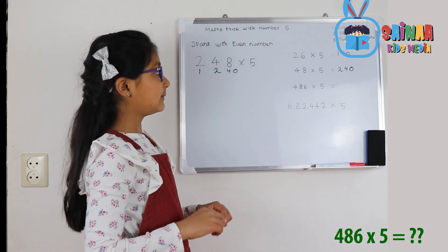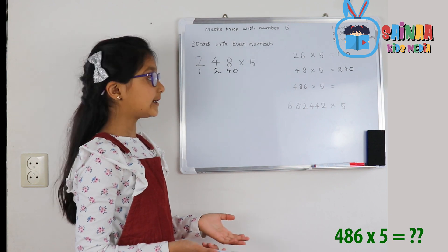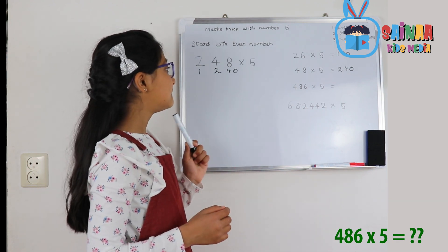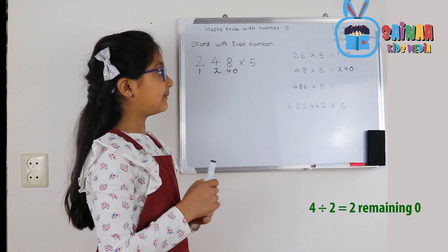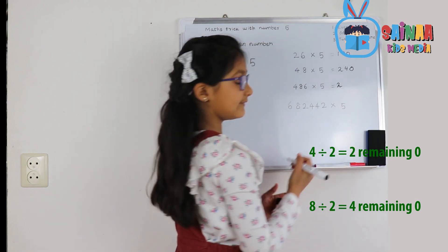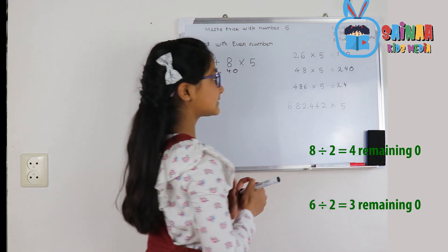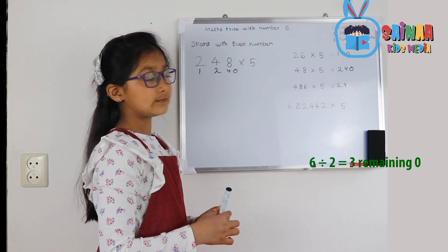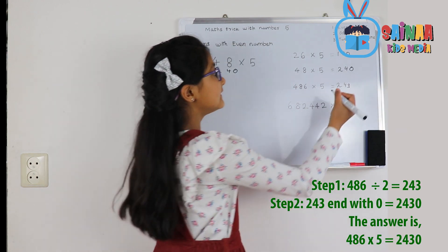Now we'll do it with 3-digit numbers — it's actually the same. You can do it with as big a number as you want. 4 divided by 2 is 2, 8 divided by 2 is 4, 6 divided by 2 is 3, and at last we add the 0.